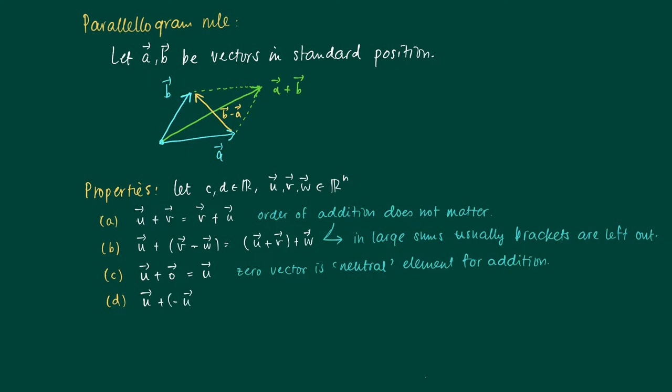u plus minus u equals the zero vector. So minus u is actually the opposite vector. It's the vector with same length as u, only the direction is opposite. And the opposite vector is frequently used in equations like we have here.